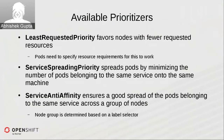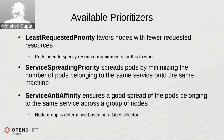The second is service spreading priority, which ensures a good spread of pods belonging to the same service among the available filtered nodes. Taking this concept further, we have service anti-affinity, which ensures a good spread of pods belonging to the same service across a certain group of nodes. While service spreading works across all nodes, service anti-affinity identifies individual groups by label selectors. We'll go into detail on this when we discuss HA.